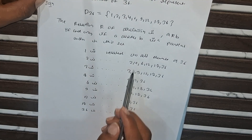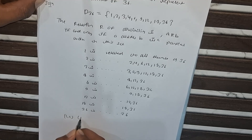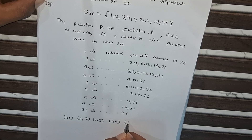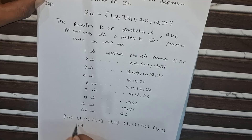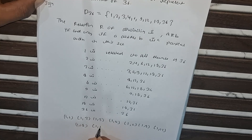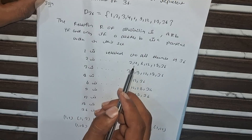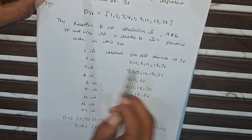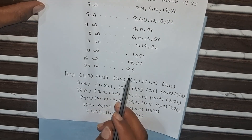This is our A and this is our B. The pairs are: (1,1), (1,2), (1,3), (1,4), (1,6), (1,9), (1,12), (1,18), (1,36), and then (2,2), (2,4), (2,6), (2,12), (2,18), (2,36). So now we have written all the possible pairs (a, b).